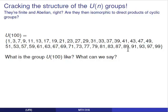One thing we might wonder about comes from the previous video. There we looked at all the finite abelian groups we could see in the table, and we noticed that each was either cyclic or a direct product of cyclic groups. Now U(100) is finite and abelian, as is each group U(n). Is it true that these groups will be direct products of cyclic groups?